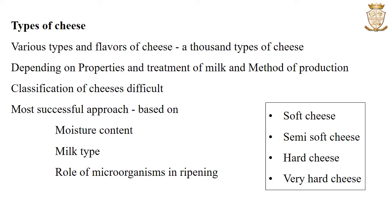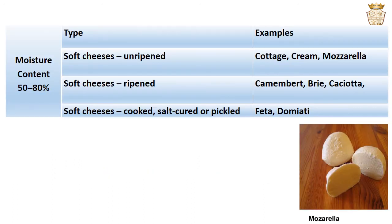There are mainly soft cheese, semi-soft cheese, hard cheese and very hard cheese. Soft cheeses contain 50–80% moisture and may be ripened or unripened, cooked, salt-cured or pickled. Examples include cottage cheese, cream cheese, mozzarella, Camembert, Brie and feta.